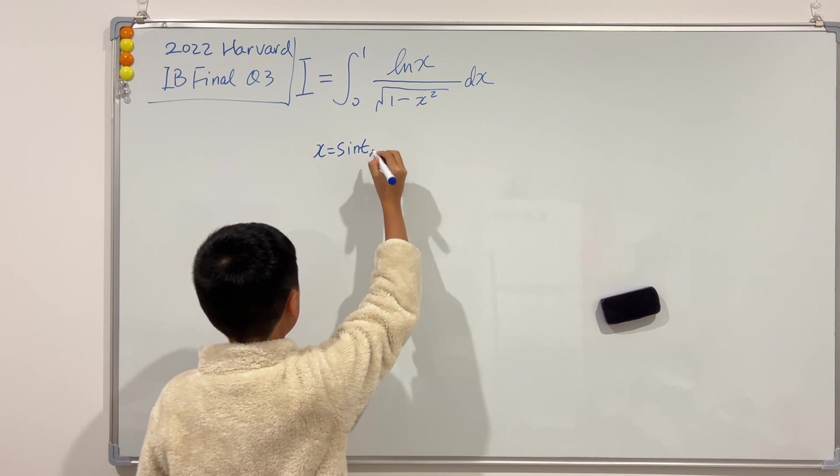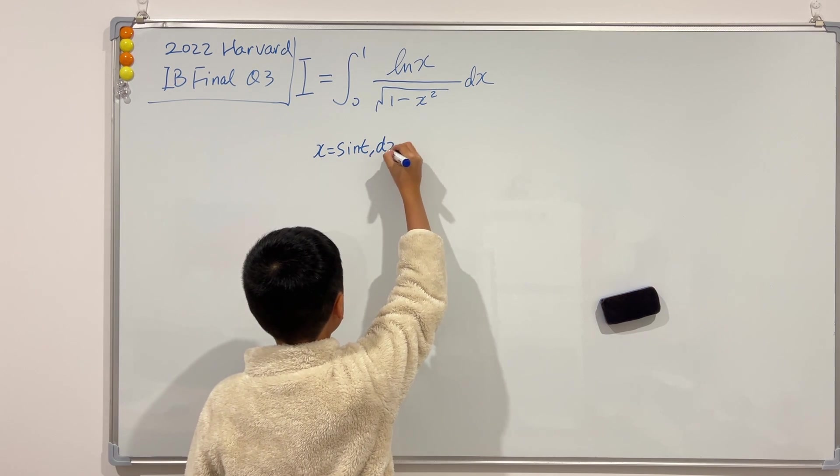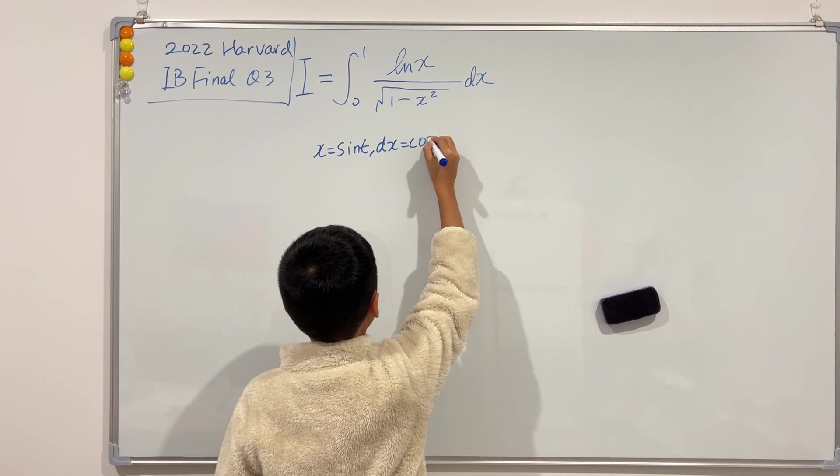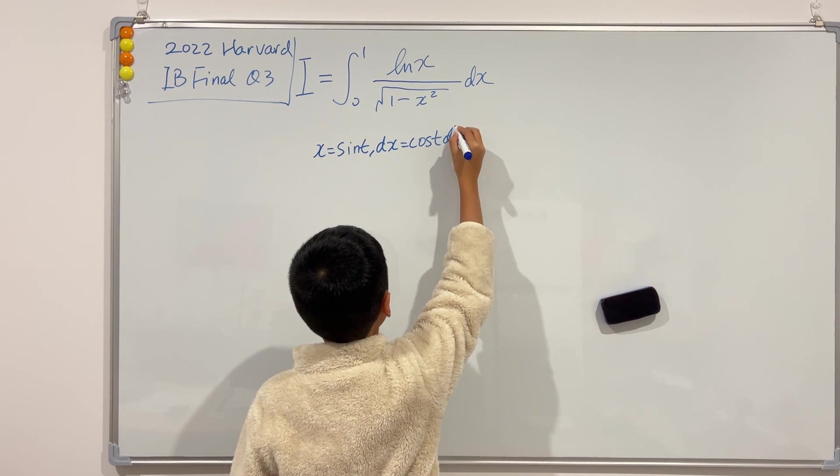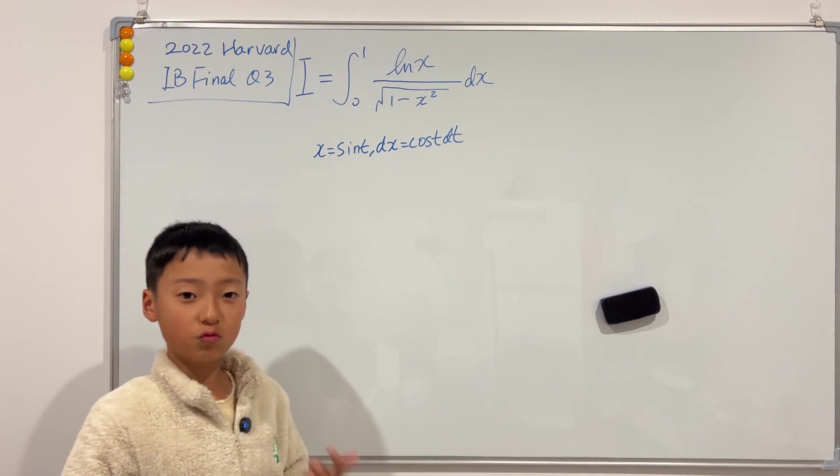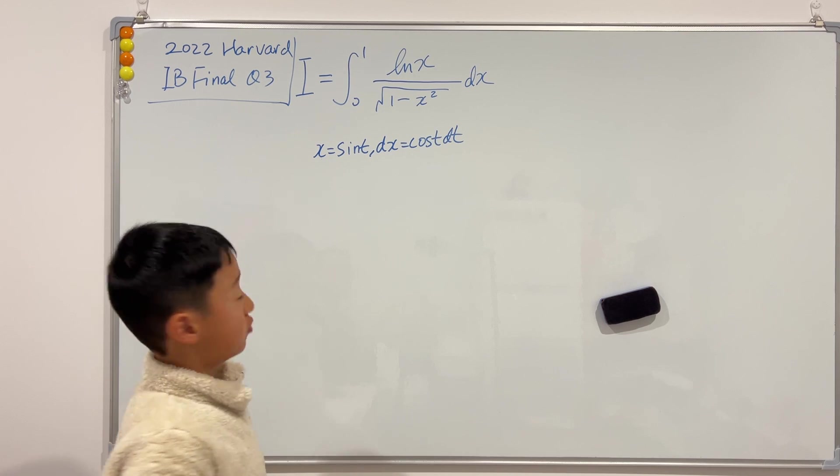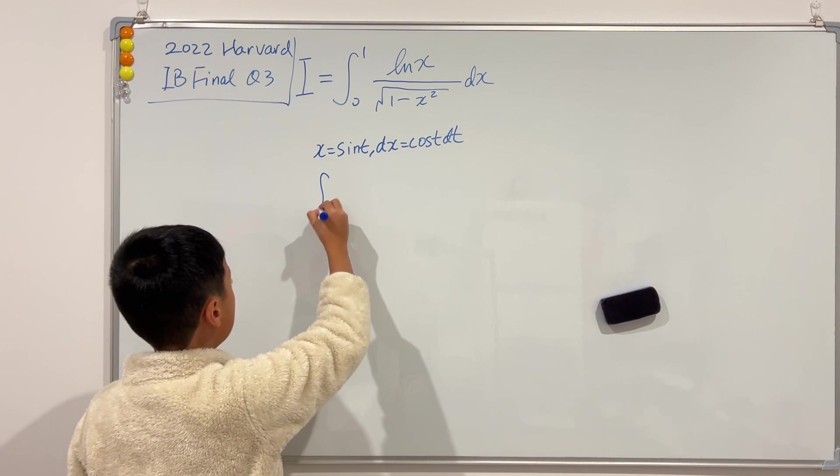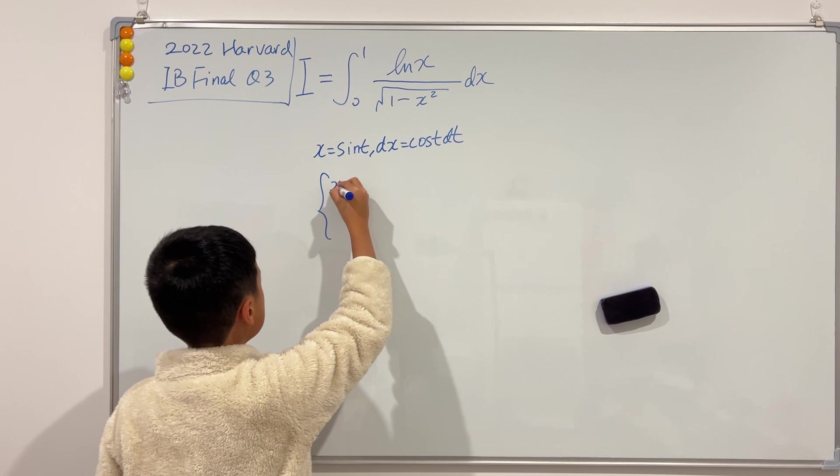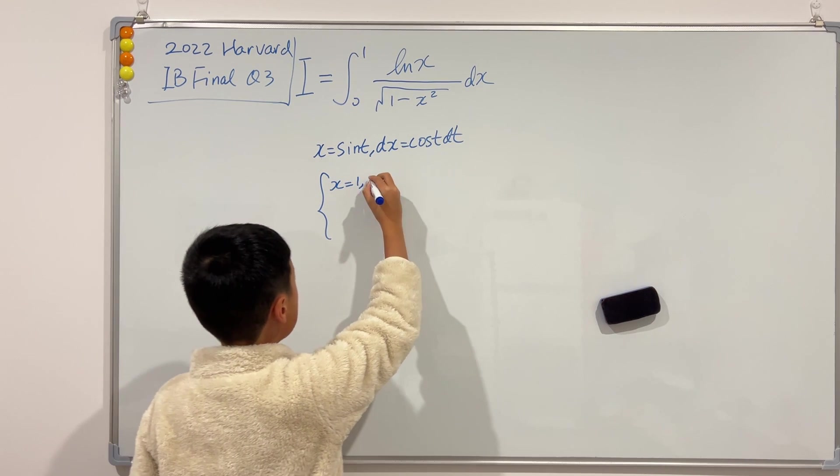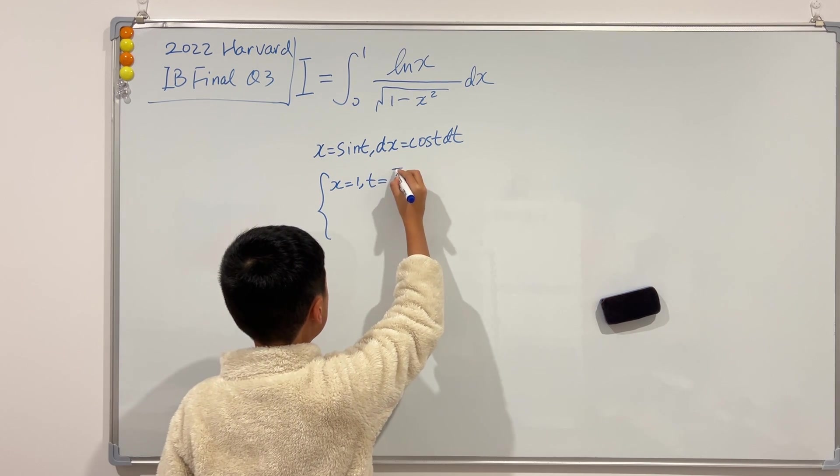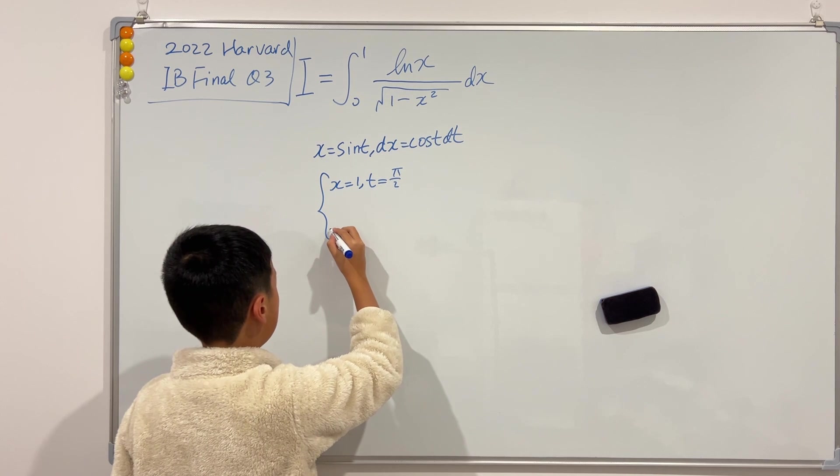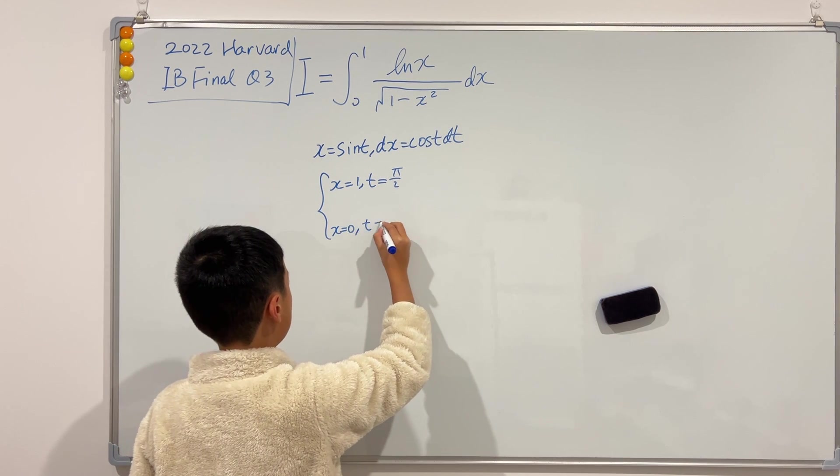So if you just let x to be sine of t, then we know that dx will be cosine of t dt. Right? And then we can do the bounds. So when x is equal to 1, we can tell that t would be π over 2, and when x is equal to 0, t would be 0.